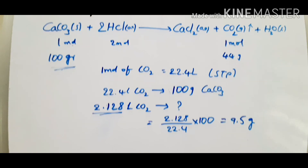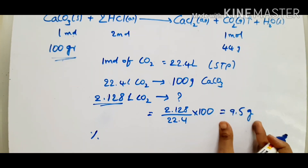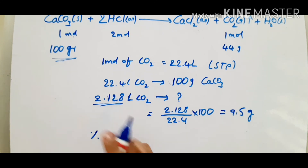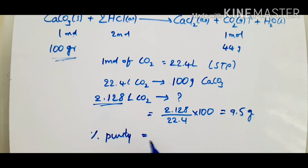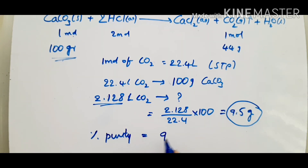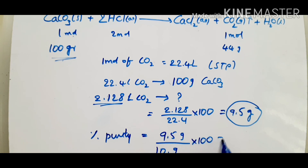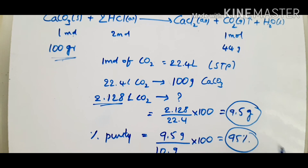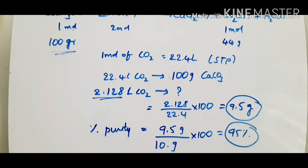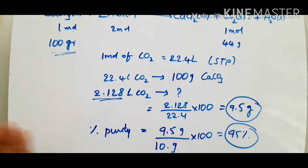So percent purity: 9.5 grams of calcium carbonate is the pure product; the impure product is 10 grams. Percent purity equals 9.5 ÷ 10 × 100 = 95% purity of chalk. This was explained step by step. I hope you understand the whole concept. Please subscribe to my channel — many people are watching my videos but not subscribing. Please subscribe if you find it useful. Thanks for watching.